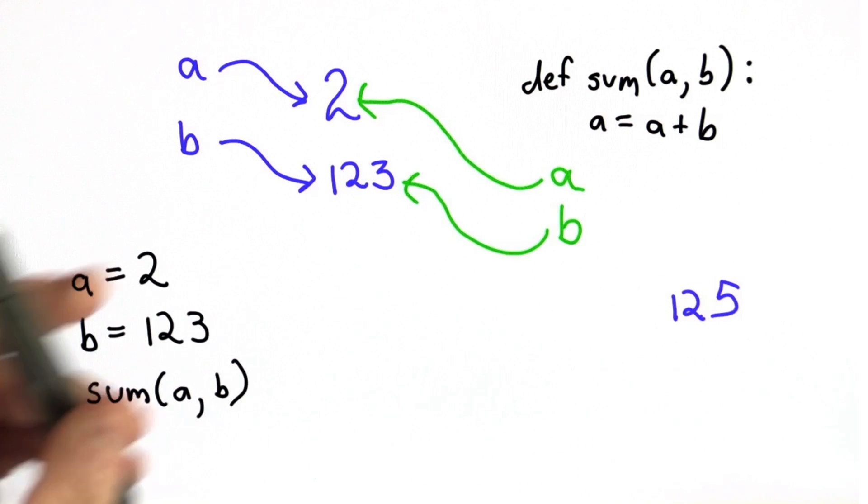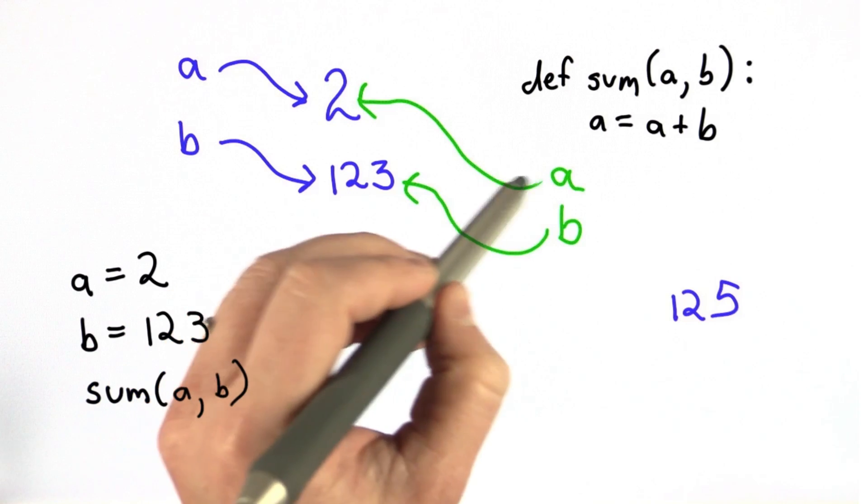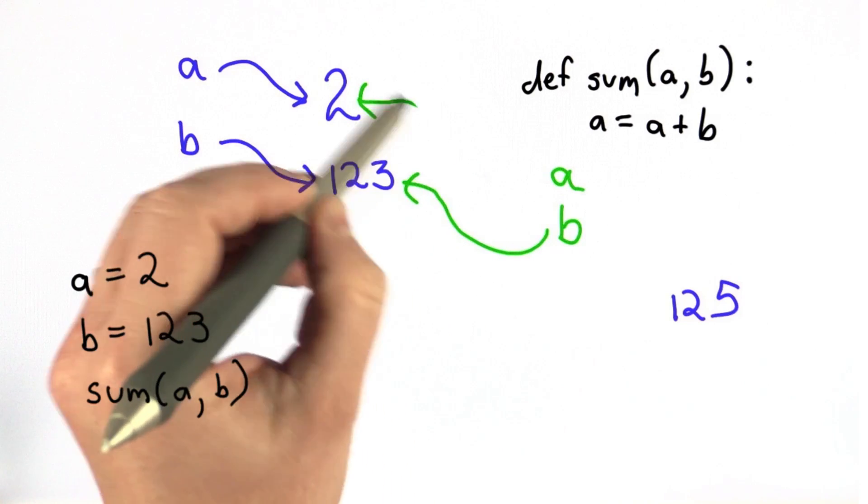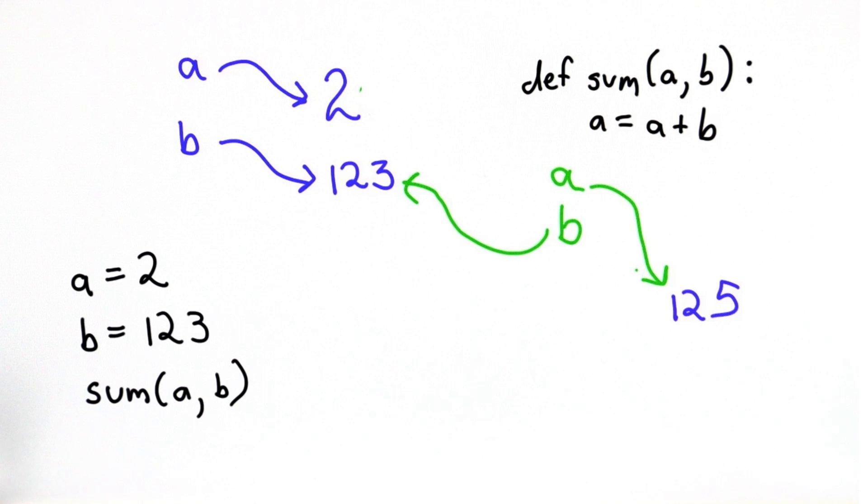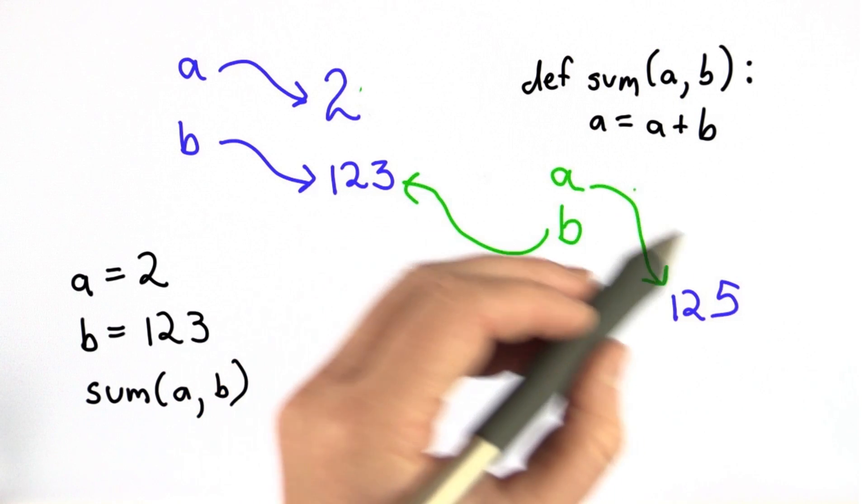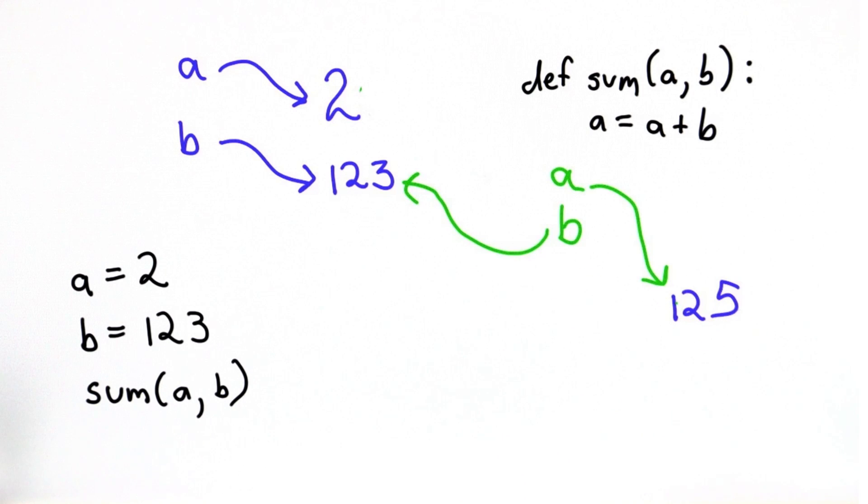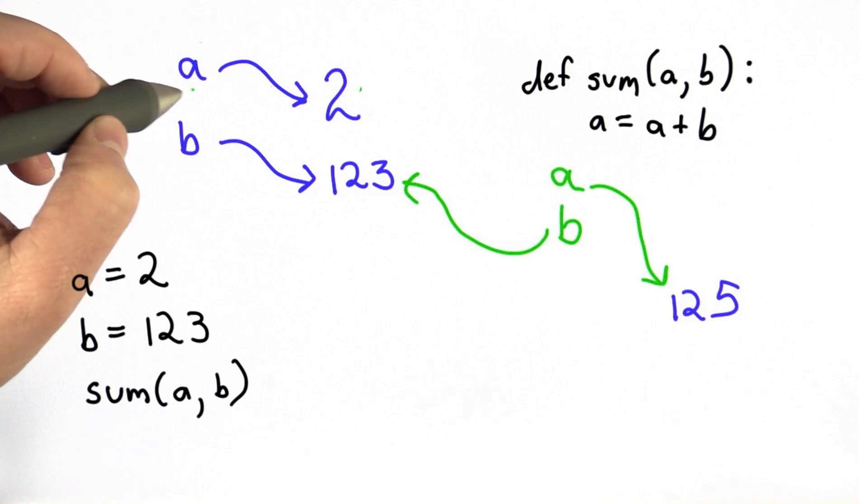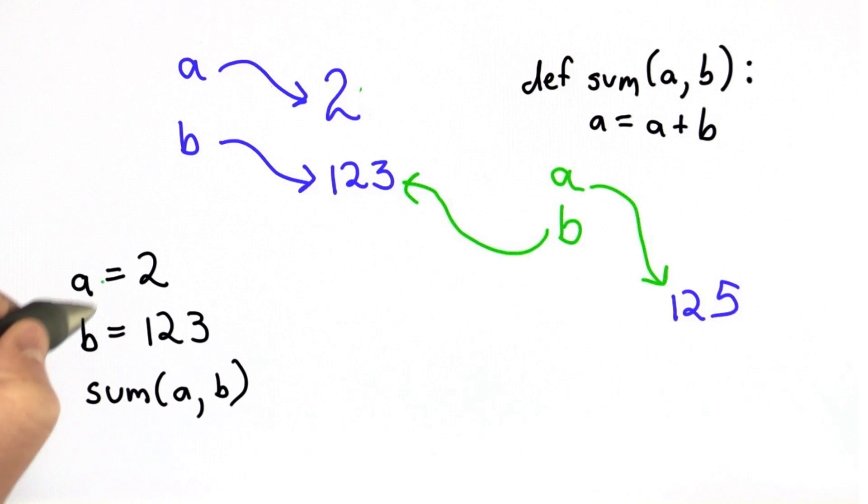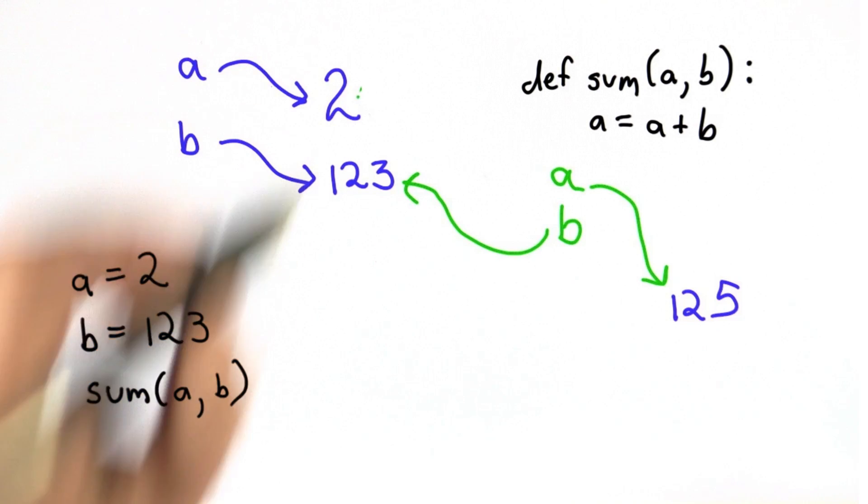And then we do the assignment. The assignment changes what a refers to. Now instead of referring to the number 2, the a that corresponds to the parameter to the procedure sum, now refers to the number 125. Note that the original value of a, the one that we named here, still refers to 2.